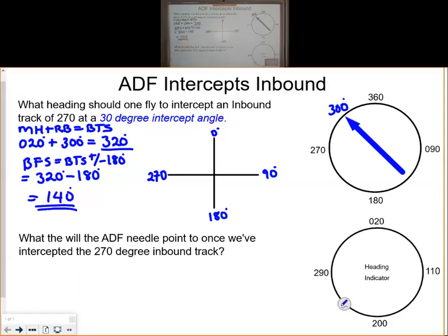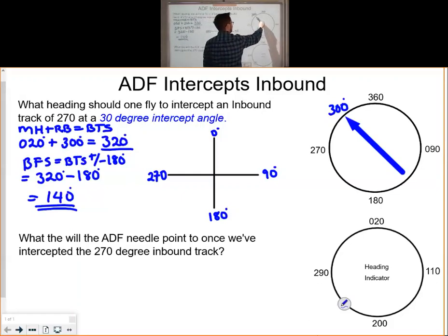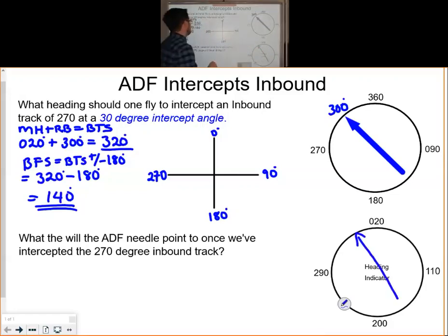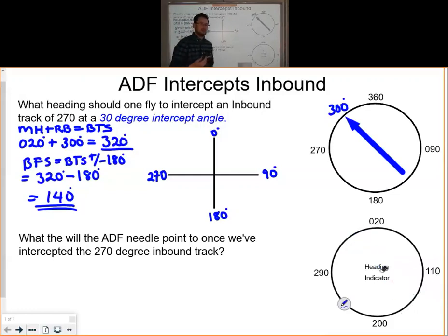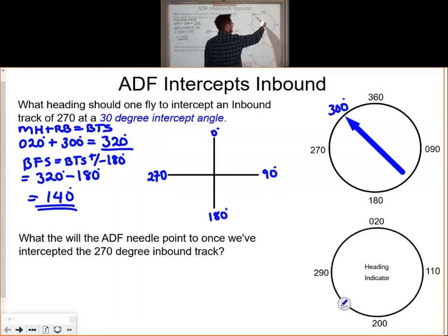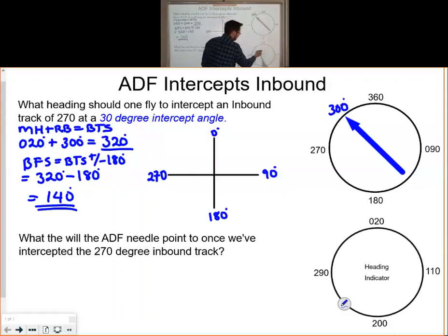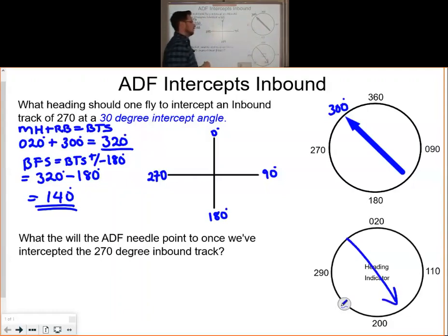Let's use the pencil trick again to calculate our bearing to the station. Put your pencil in the same direction as the arrow on your ADF indicator and move it down towards your heading indicator in the same direction. You'll notice that our bearing to the station is approximately 320 degrees. To calculate the bearing from the station, put your pencil in the same direction as the tail on the ADF indicator and move it down towards your heading indicator — the bearing from the station is approximately 140 degrees.